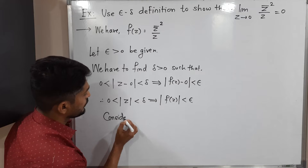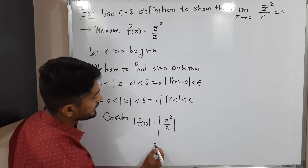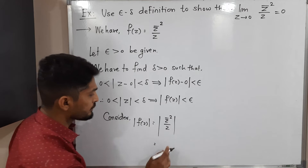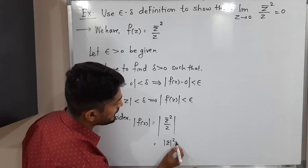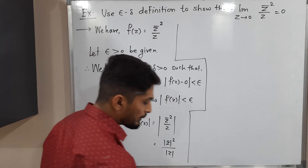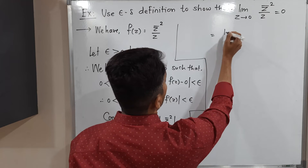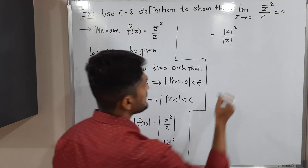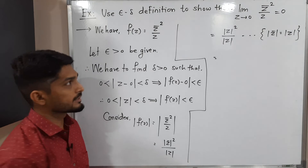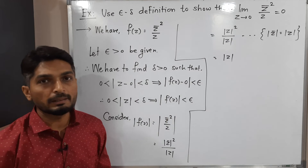Consider |f(z)|. Our f(z) is z-bar squared divided by z. Because of the properties of modulus, we can write |z-bar squared| divided by |z|. Since |z-bar| equals |z|, this becomes |z|² divided by |z|, and |z| cancels, giving us simply |z|.